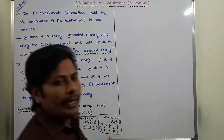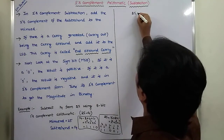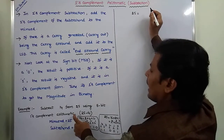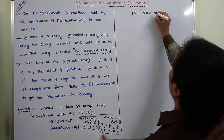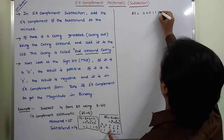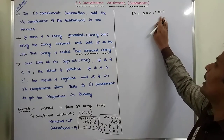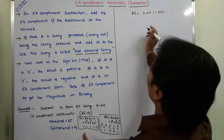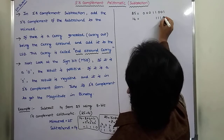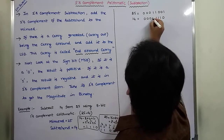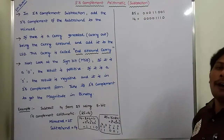These numbers can be represented in 8-bit form. So 25 in 8-bit binary is 0, 0, 0, 1, 1, 0, 0, 1. Next, 14 in 8-bit binary is 0, 0, 0, 0, 1, 1, 1, 0, with the remaining 4 bits as 0s. This is the binary form of 25 and the binary form of 14.